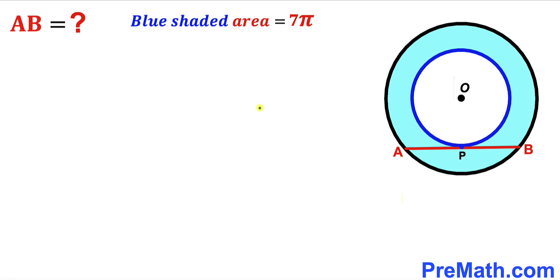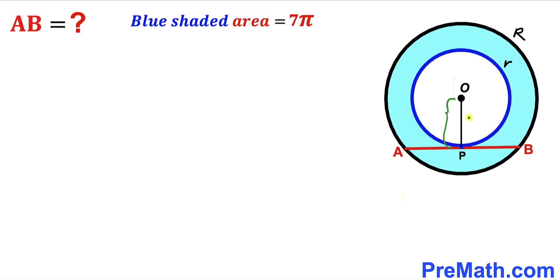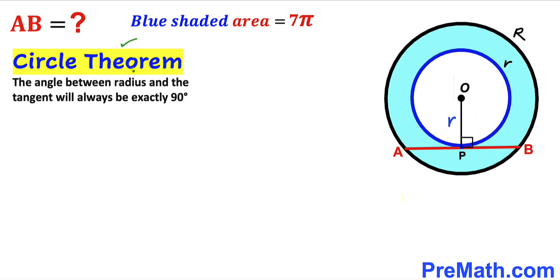Let's get started. First, let's assume the radius of the big circle is uppercase R and the radius of the small blue circle is lowercase r. Now we are going to connect center O with point P. We can observe that OP is the radius of the small blue circle, so its length is lowercase r.